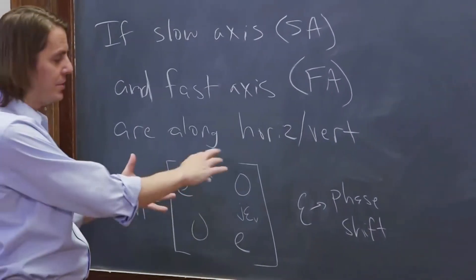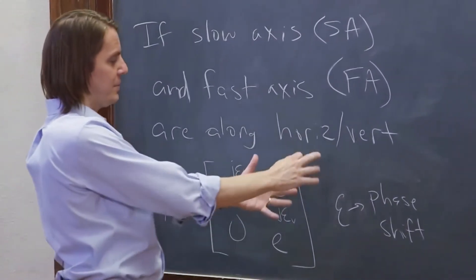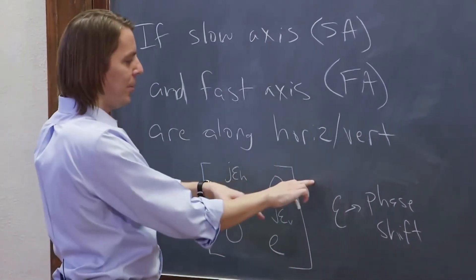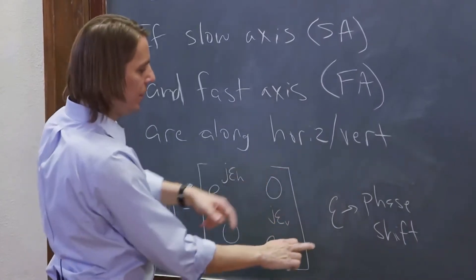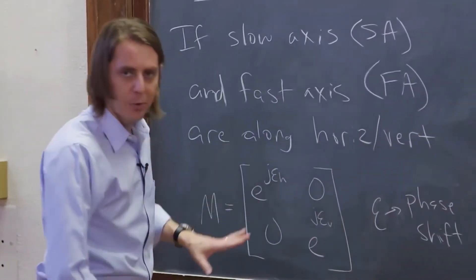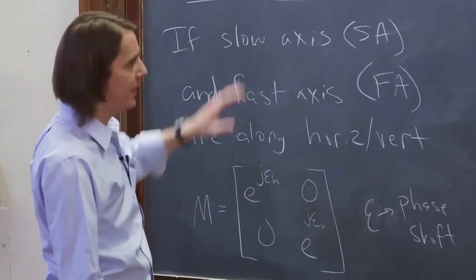And you can see why this is the general matrix. If you multiply this by 1, 1 or 1, 0, E horizontal is going to be multiplied by the horizontal component, and E vertical is going to be multiplied by the vertical component. So that's the general matrix for any phase retarder.